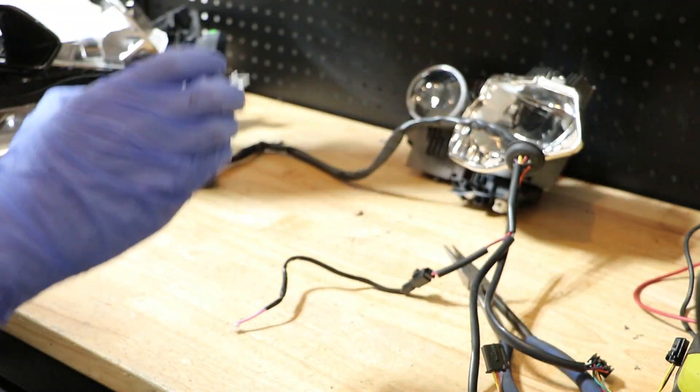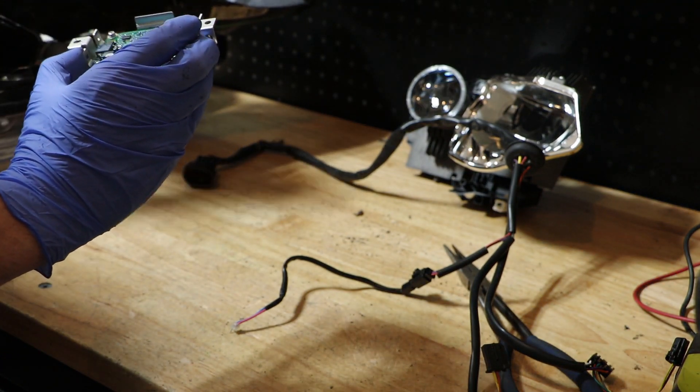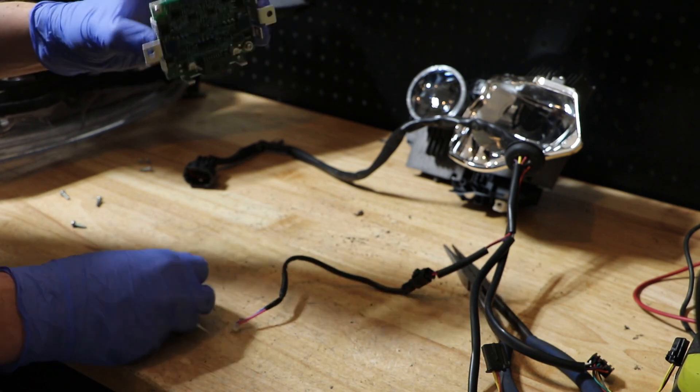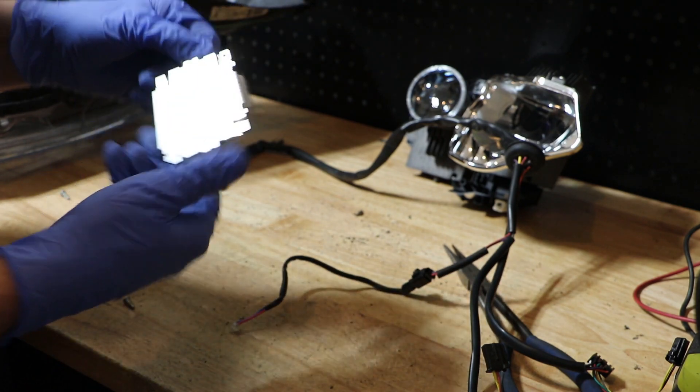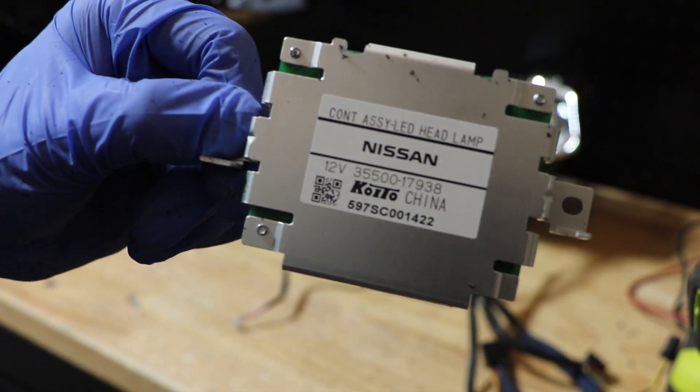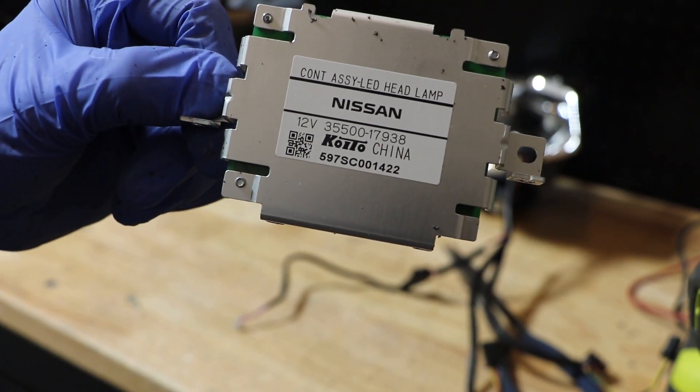Now we can remove our little circuit board that controls all of the LED lights on the inside. Here is the part number on the LED control unit.